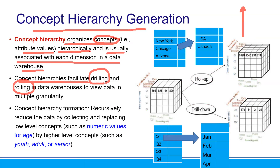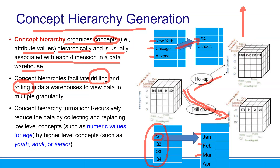Just a simple idea. You already learned from the attribute aggregation — we can drill down. For example, from Q1, Q2, Q3, Q4. So Q1, I want to drill down to January, February, March. We call this drill down. Or I can roll up. Roll up means I know the city — New York, Chicago, Arizona — so I roll up into the country, USA. This is the concept of roll up.